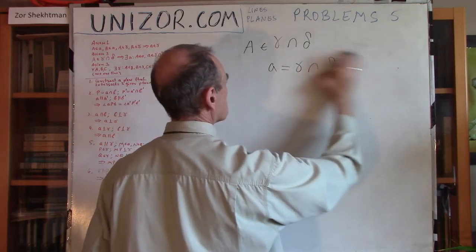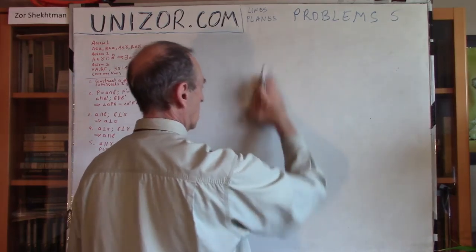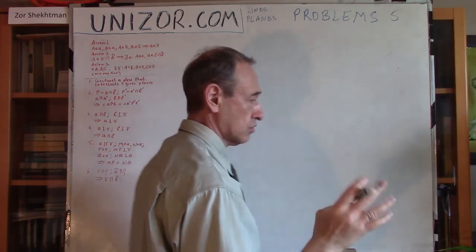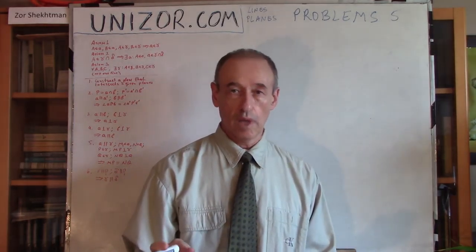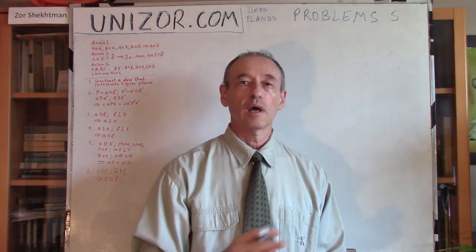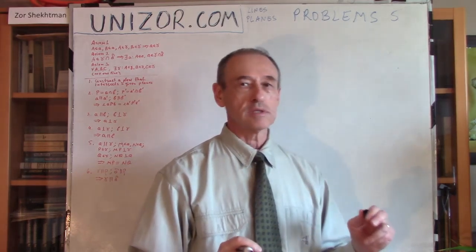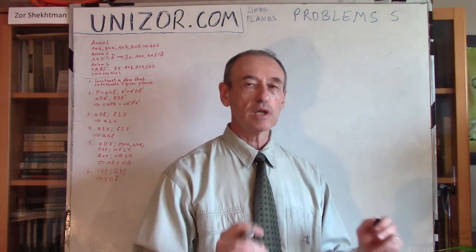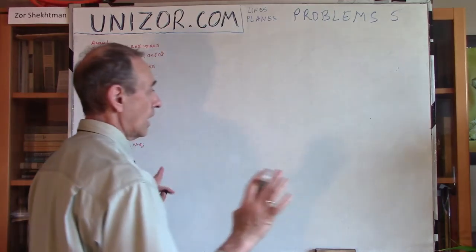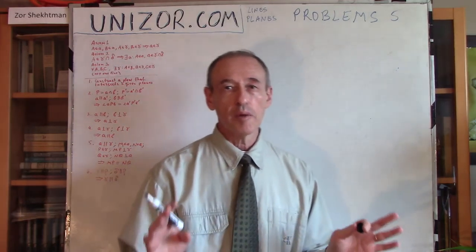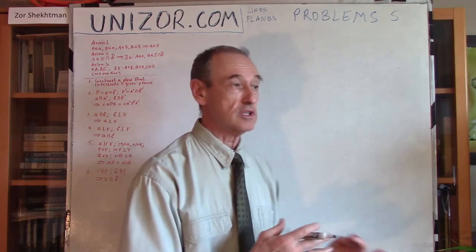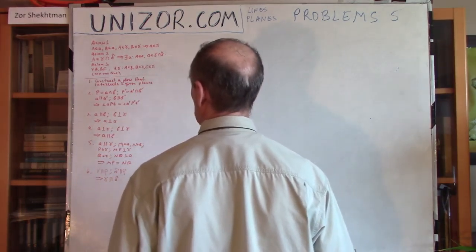The third axiom is very simple. If you have three points in space which do not lie on the same line, then there is one and only one plane which passes through these three points. So three points not on the same line uniquely define a plane which contains them. I just wanted to remind you these main axioms because you will always eventually be using them. Now let's go to the problems.